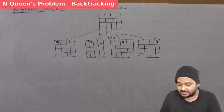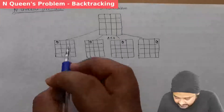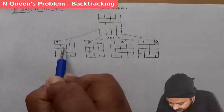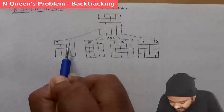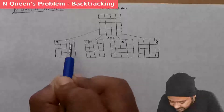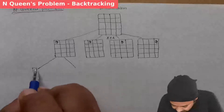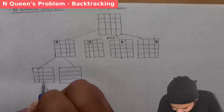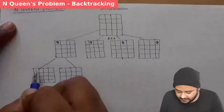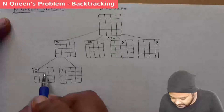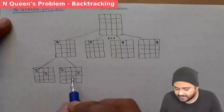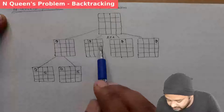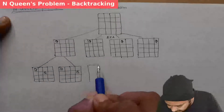Next, we move on to placing the second queen. We cannot place it in the same row as it would conflict horizontally, and one position is blocked diagonally. So there are two remaining opportunities to place the second queen. We draw two boxes for these two options. For the branch where the queen is in a different first position, only one placement option exists for the second queen, so we draw a single box.